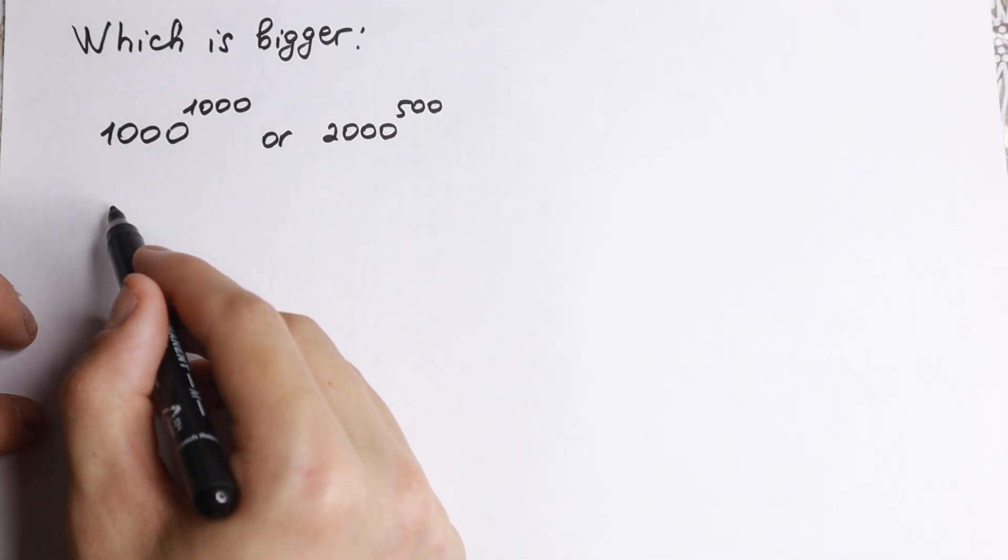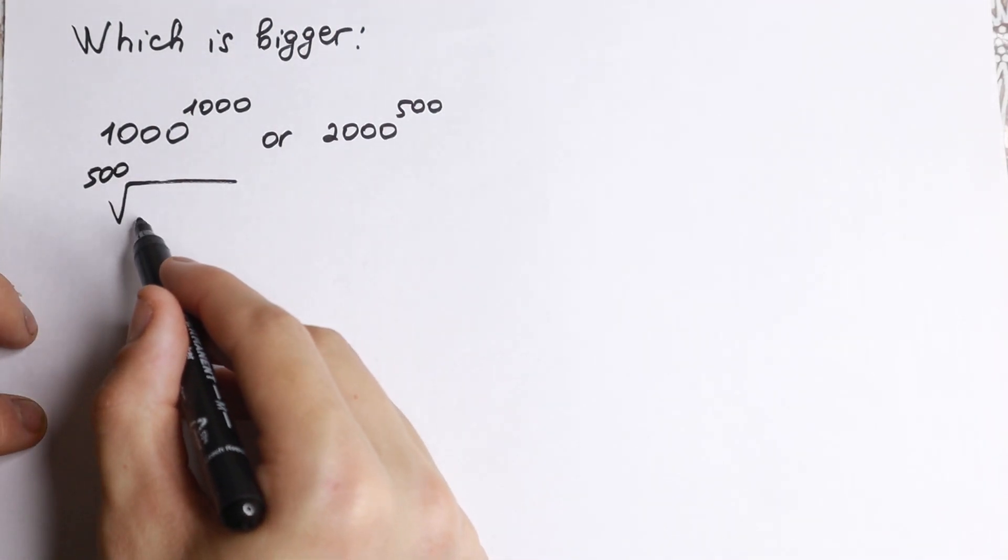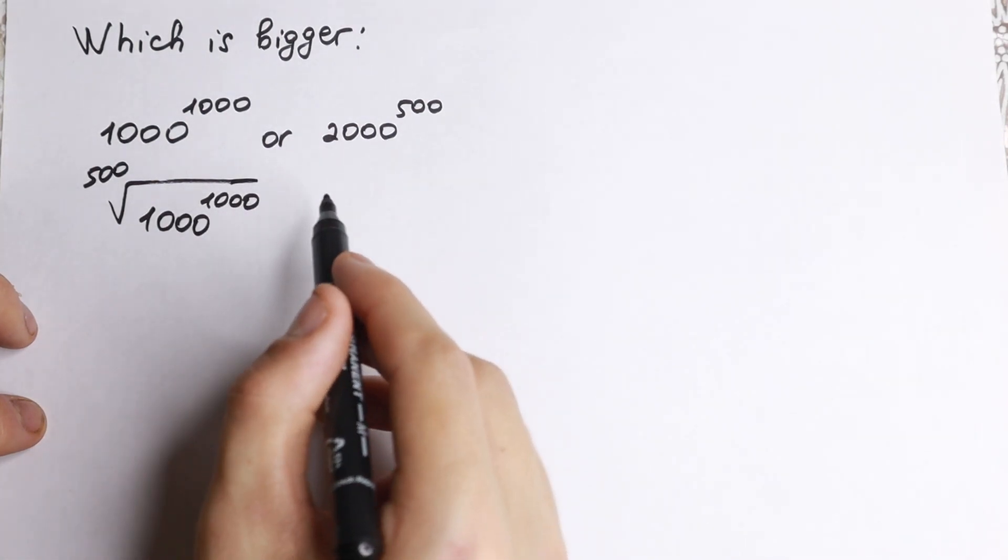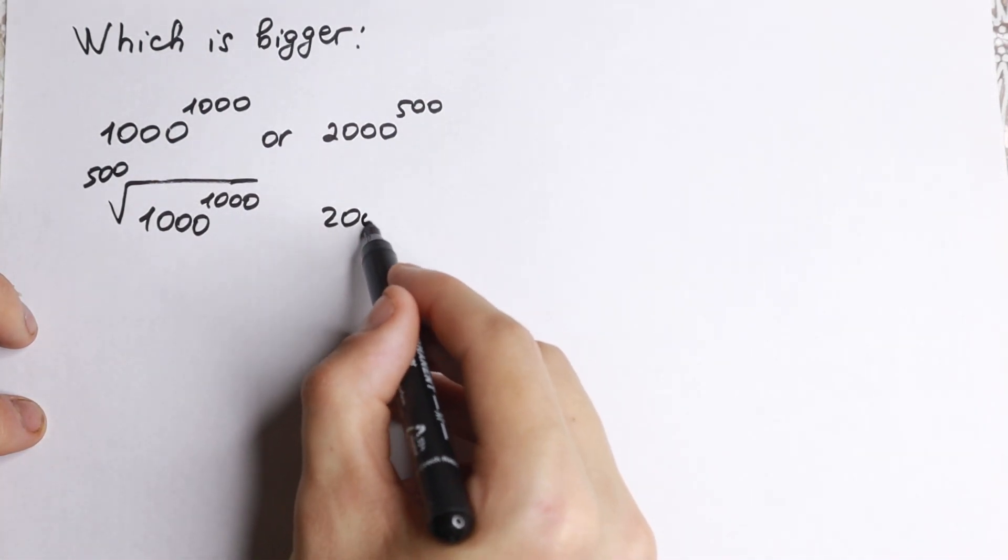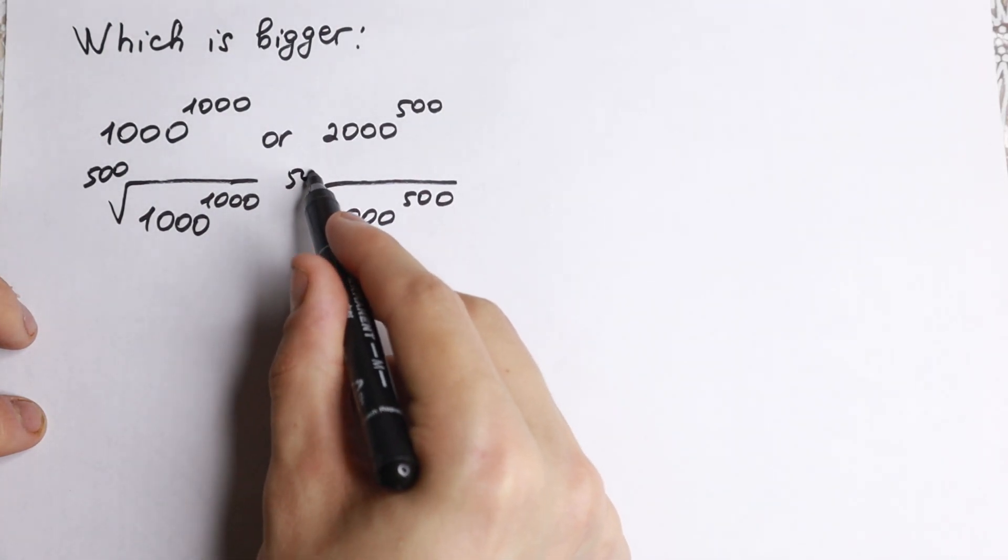So as a result, we will have that square root - just taking the 500th root from both sides. So on the left hand side we have this 500th root, and on the right hand side, 2000 to the power 500, and of course we have the 500th root right here.